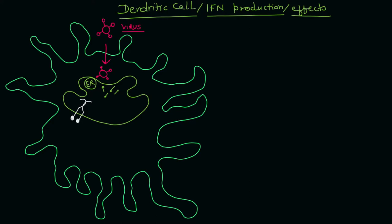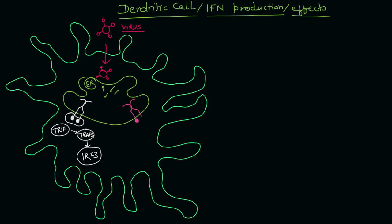Here in white color you're seeing toll-like receptor 3. After interacting with the toll-like receptor, these viral proteins are going to activate a pathway which includes the TRIF downstream signaling molecule. TRAF3, another downstream signaling molecule, will activate IRF3. This is one pathway regulated by TLR3.